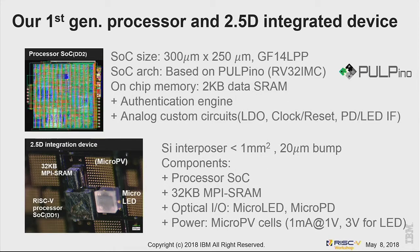This is our first generation processor. The top picture shows the layout and the second picture shows the integrated device. Our processor size is 300 microns by 250 microns, using 14 nanometer technology. The SoC architecture is based on Pulpino, so we are using a 32-bit core. On-chip memory is reduced to 2 kilobytes of data SRAM only. We added a hardware authentication engine for faster SHA calculation, and analog custom circuits to support power supply, clock, reset generation, plus PD and LED drivers.